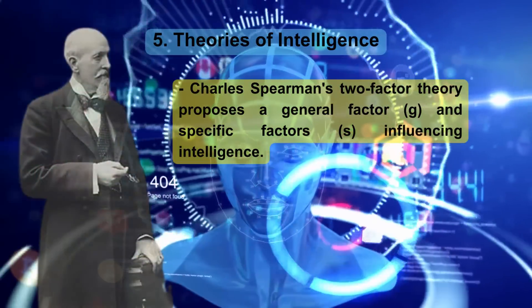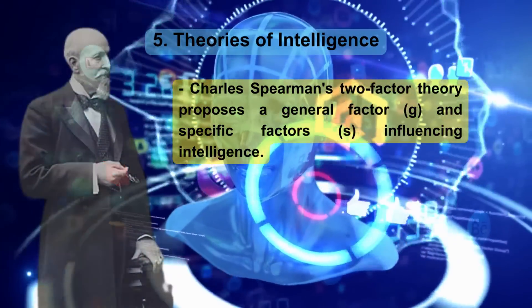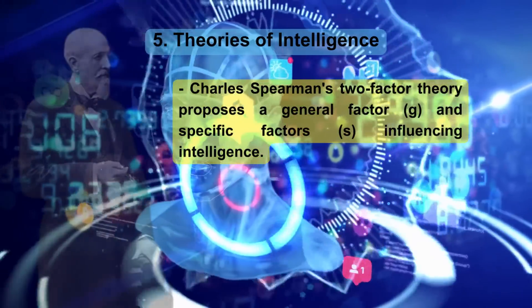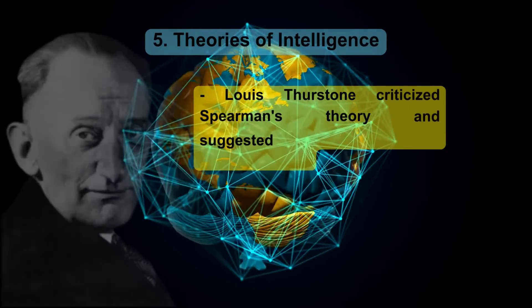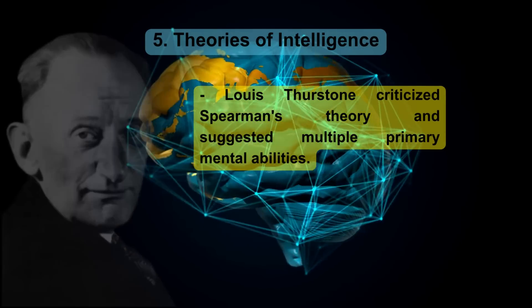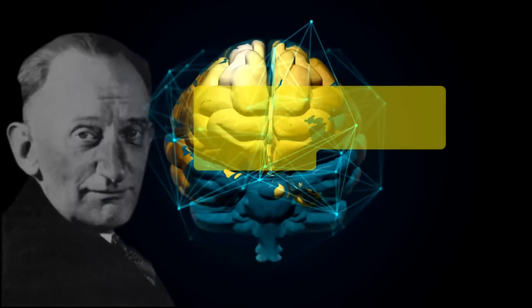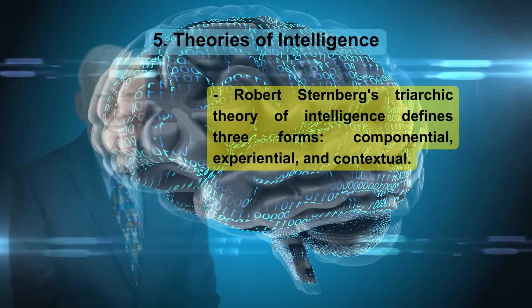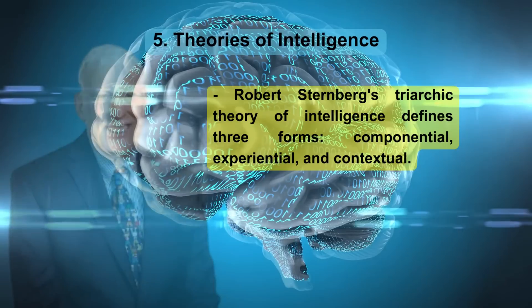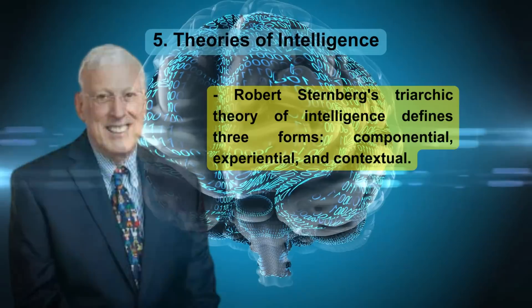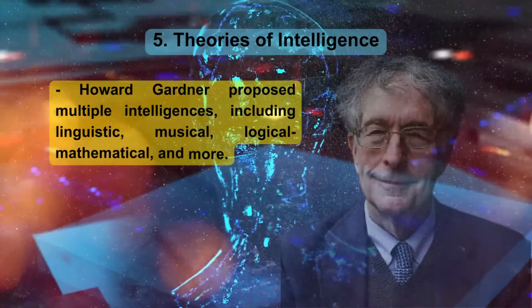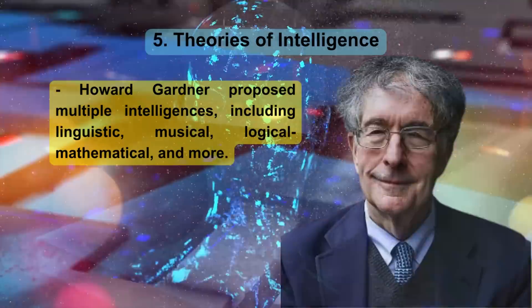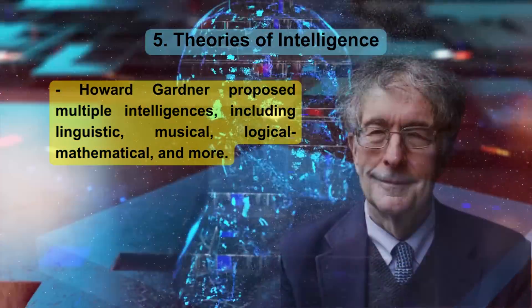Theories of Intelligence: Charles Spearman's two-factor theory proposes a general factor (G) and specific factors (S) influencing intelligence. Louis Thurston criticized Spearman's theory and suggested multiple primary mental abilities. Robert Sternberg's Triarchic theory of intelligence defines three forms: componential, experiential, and contextual. Howard Gardner proposed multiple intelligences, including linguistic, musical, logical, mathematical, and more.